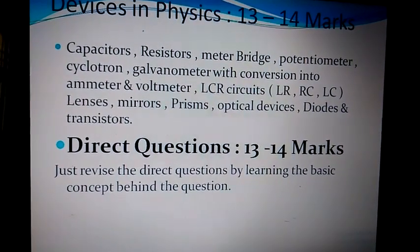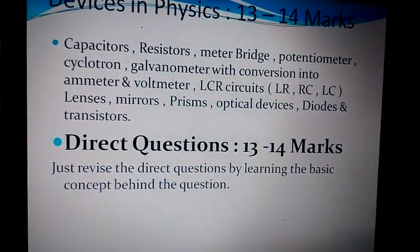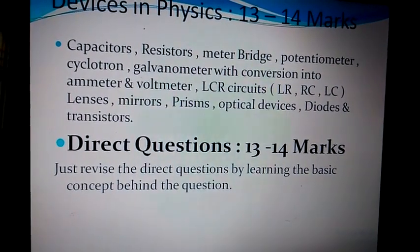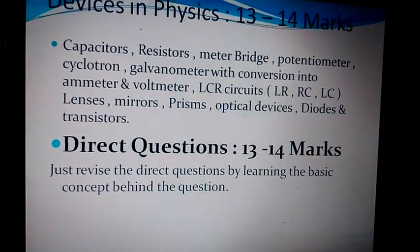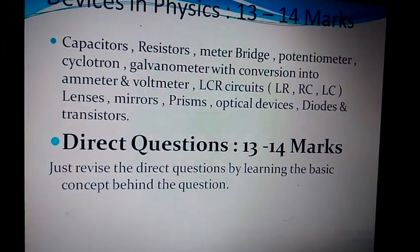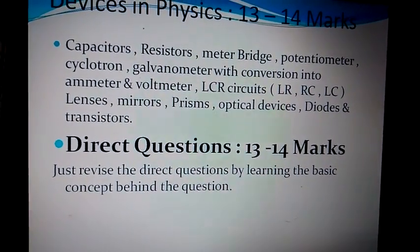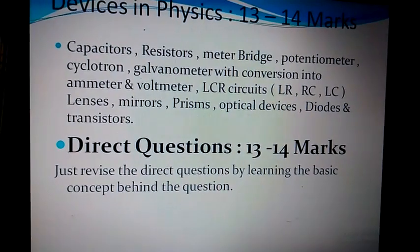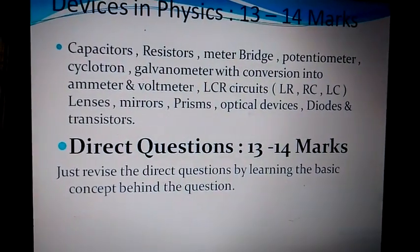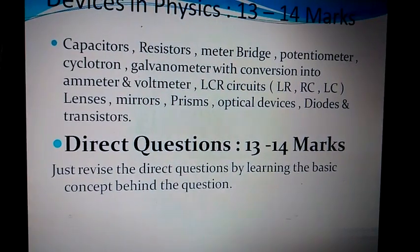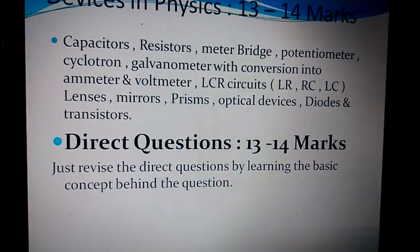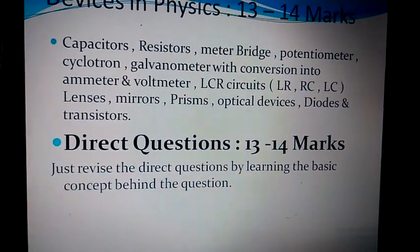Questions may come from the LCR circuit parts with LR combination, RC combination or LC combinations. When the combination is LR, RC or LC, you have to use the impedance in place of the resistance. Impedance is equal to square root of R squared plus XL minus XC whole squared. When there is LR, put XC zero. When there is RC, put XL zero. When there is LC, put R equal to zero. From optics, lenses, mirrors, prisms, optical instruments. From semiconductors, diodes and transistors.